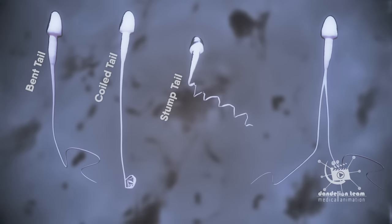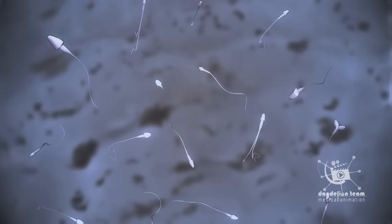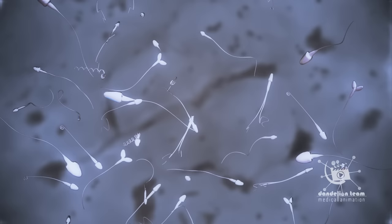Teratozoospermia is an increase in the concentration of abnormal sperms in the man's semen. This condition is diagnosed when sperm with abnormal morphology exceed 96 percent of a man's total sperm sample.